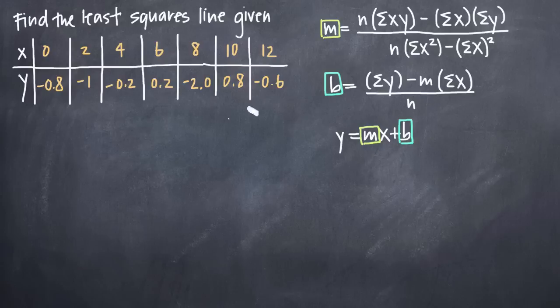So normally when these formulas are given to you, the formulas for M and B, they look much more complicated than this. This was the way that I always remembered them when I first learned this concept, and it's a more simplified version. It's a less technical but more simplified version for the formulas for M and B.